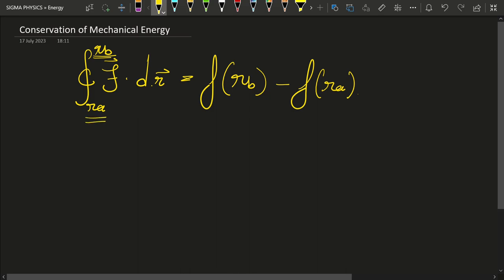And since this is the conservative force, F here is a conservative force, it only depends upon Rb and Ra and hence you are going to get an equation of this form.